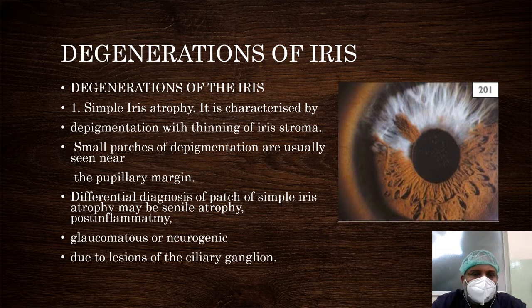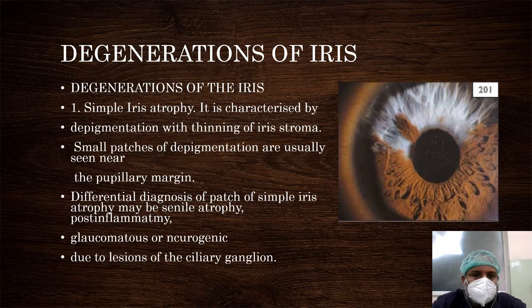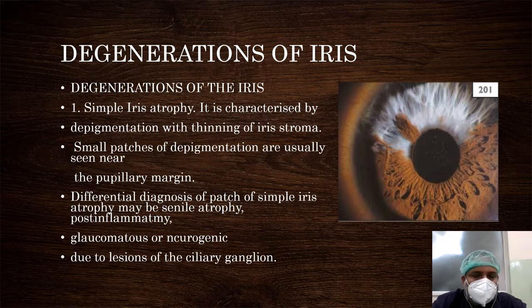Next we go to the degenerations of the iris. The first is simple iris atrophy. It is characterized by depigmentation or thinning of the iris stroma. You can see small patches of depigmentation near the pupillary margin. The differential diagnosis of patchy clinical iris atrophy may be senile atrophy, post-inflammatory, it may be due to glaucoma, neurogenic, or due to lesions in the ciliary ganglion.